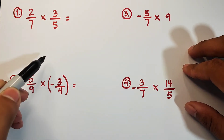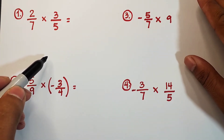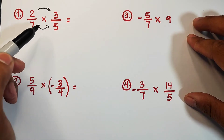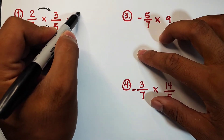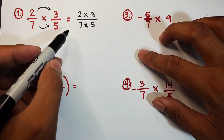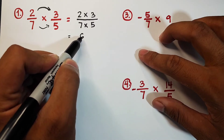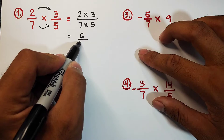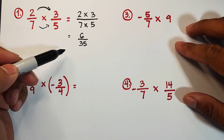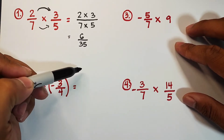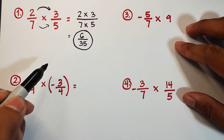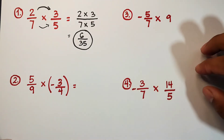Let's try number one. In number one we are given two over seven times three over five. Basically, when we are multiplying rational numbers or fractions, we are simply multiplying the numerators and the denominators. So we have two times three over seven times five. Two times three is equal to six, over seven times five which is equal to thirty-five. After multiplying, express your final answer in lowest terms. Six over thirty-five is already in lowest terms.